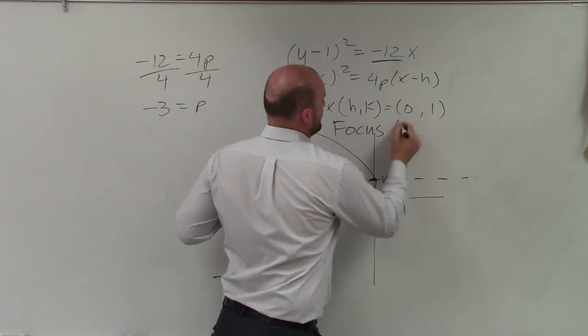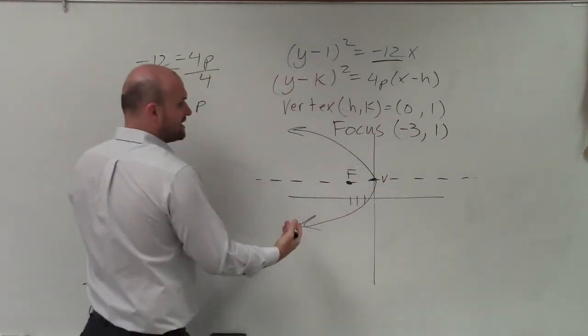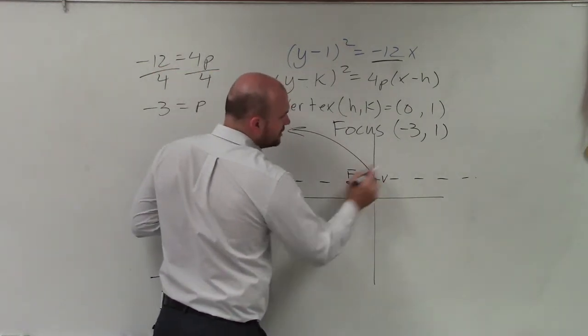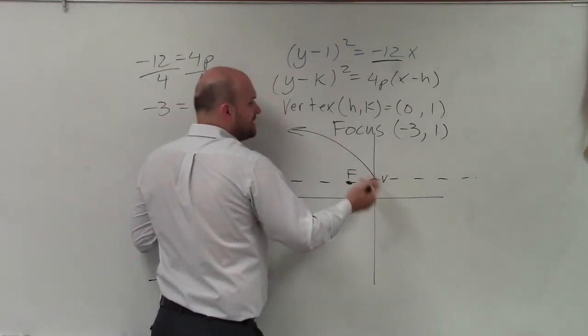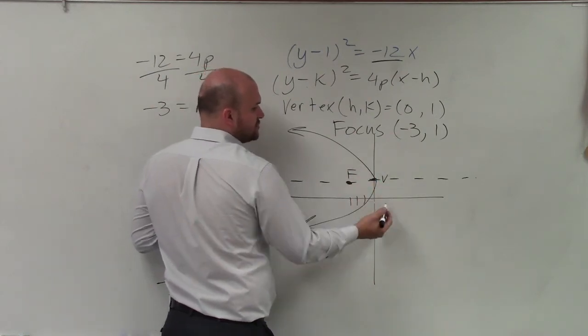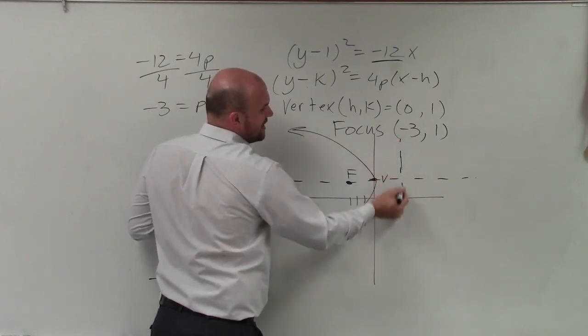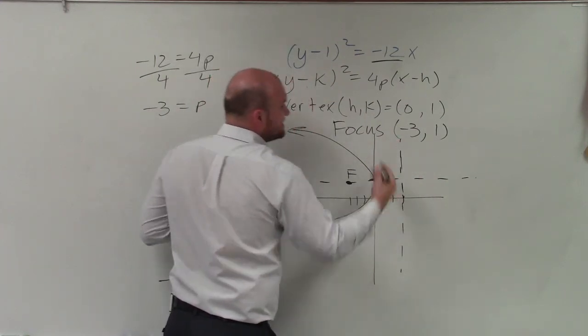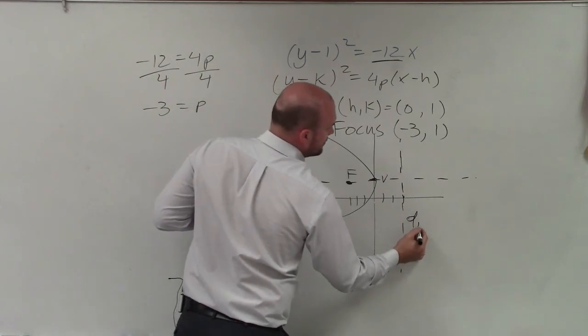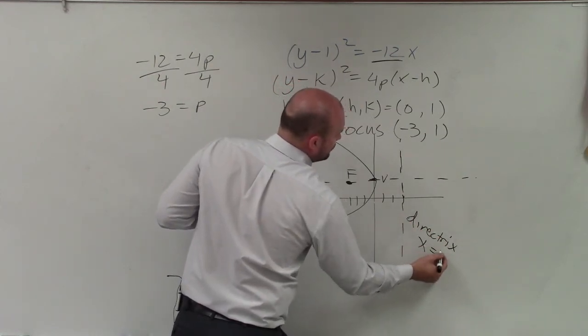The directrix is going to be perpendicular to the axis of symmetry and the same distance from the vertex to the focus as the vertex to the directrix. So to find my directrix, I need to go to the right 3 units and create a perpendicular line. And since it's a vertical line, x equals 3.